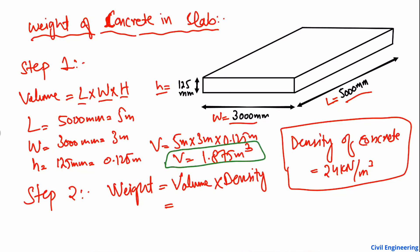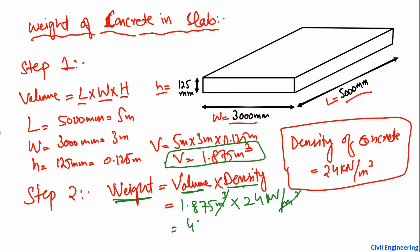Now to find out the weight, we multiply the volume by the density. The volume is 1.875 cubic meters and the density is 24 kilonewtons per cubic meter. Cubic meters cancel out and we get the value of 45 kilonewtons. So 45 kilonewtons is the weight of the concrete in this slab.